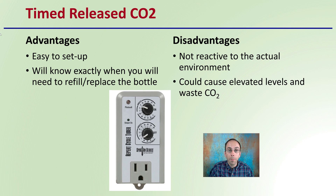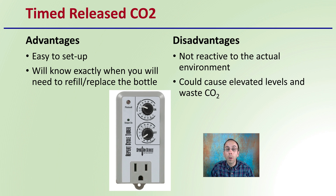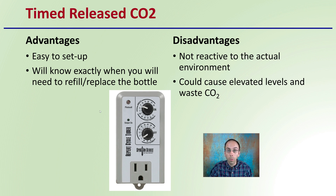First off, we have the timer-based release of carbon dioxide, and we see an example of one right here. The advantage is that this is very easy to set up. You'll know exactly when you will need to refill or replace the bottle, because it's going to come on for a set duration of time and off for a set duration of time. This one also has a photo cell, so it will ensure that this cycle will only repeat when the lights are on or when the sunlight is out, which is when plants will utilize carbon dioxide.